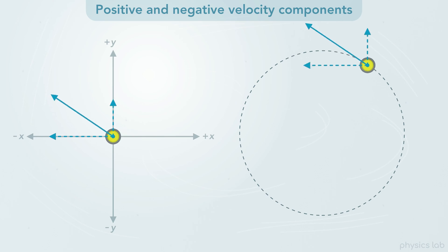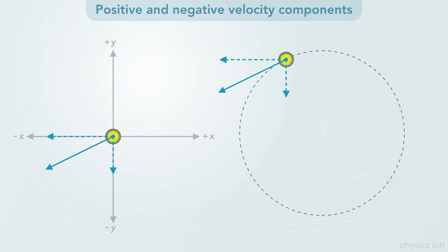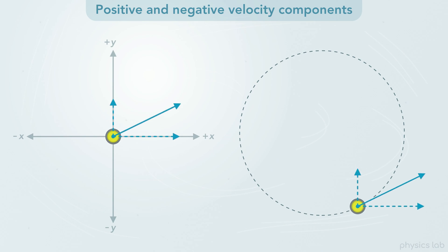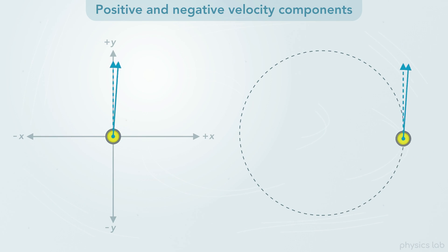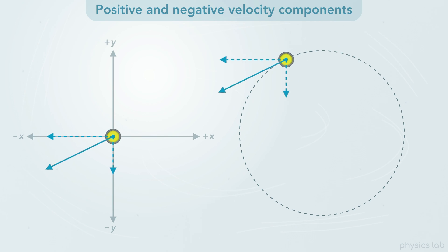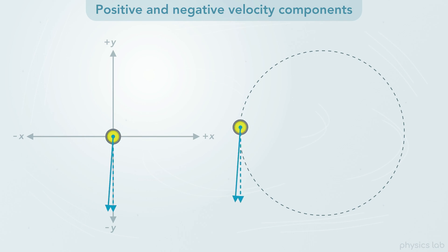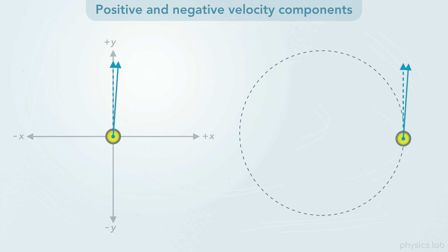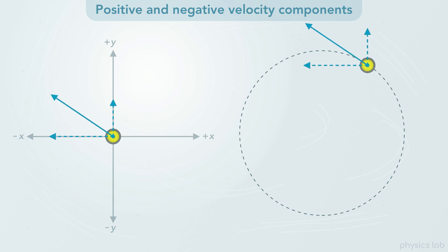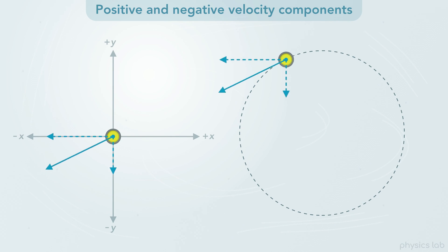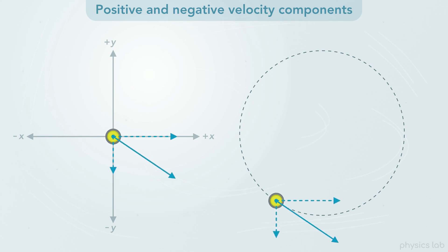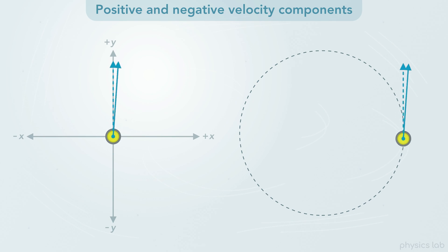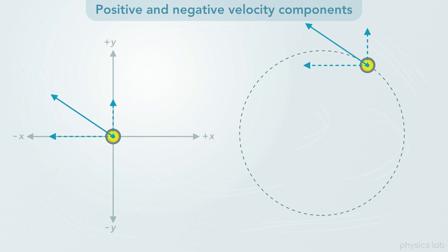As a visual example, here's a curling stone moving in a circle. Its speed is constant, so the velocity vector is always the same length. But watch how the x and y velocity components change depending on which direction the stone is moving at any moment in time.